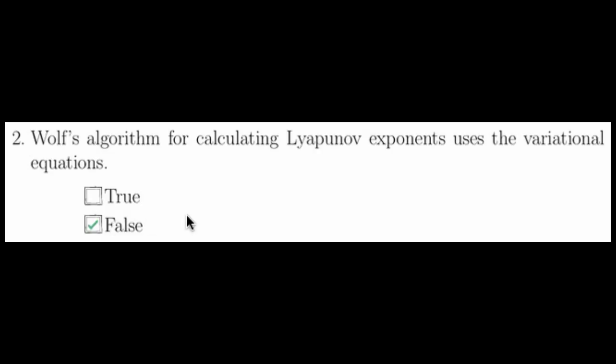The variational equation is a way to get at the full spectrum of Lyapunov exponents if you have the governing equations, which you usually do not. Wolf's algorithm is a way of calculating the Lyapunov exponents given a trajectory of a dynamical system.